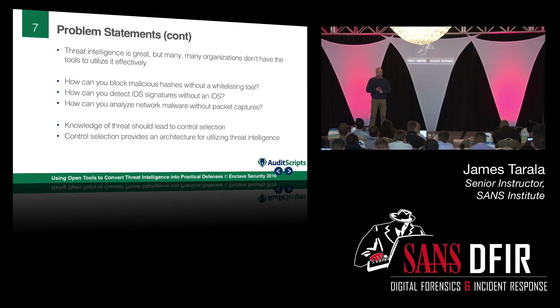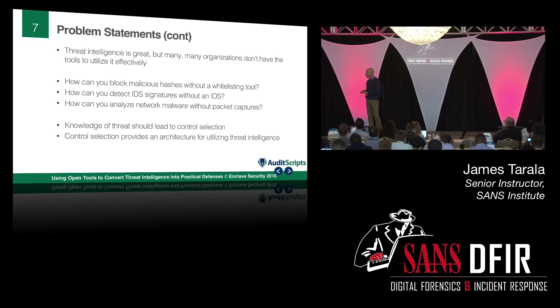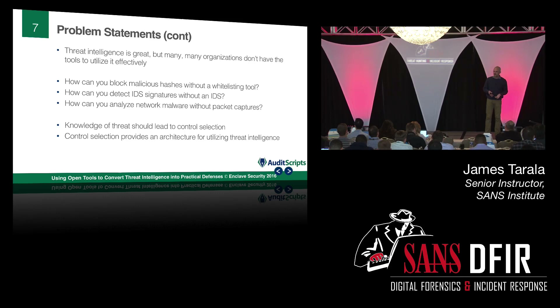How do you block malicious hashes if you don't have a whitelisting tool? It's great to get the hash, but if you have no way to block it, how do you take advantage of that? If you have IDS signatures but no IDS, how do you respond? How do you analyze traffic from malicious code if you don't have packet captures? People still don't have whitelisting. People still don't have IDSs. Outside their border, people rarely do packet captures.